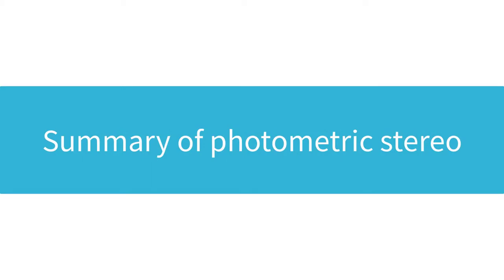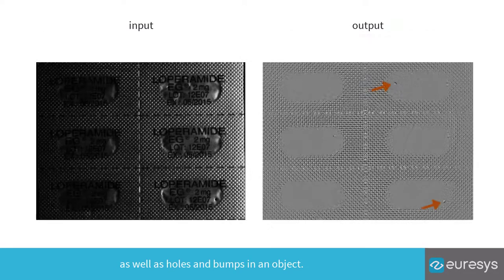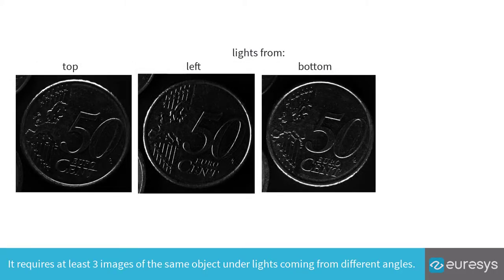Summary of Photometric Stereo. Photometric stereo is a technique allowing to highlight edges and scratches, as well as holes and bumps in an object.